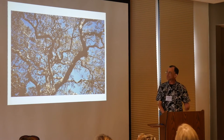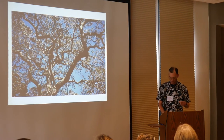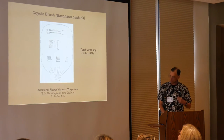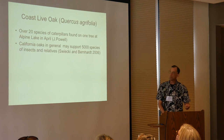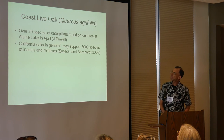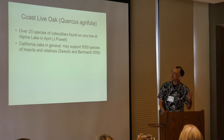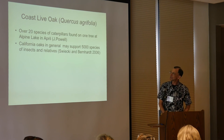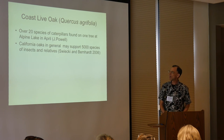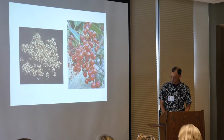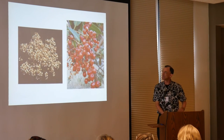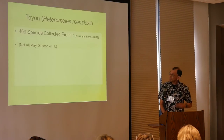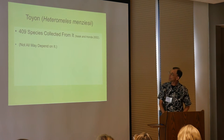We also have the coastal live oak. A lot of these species are doing very many different things — that's additional detail. One individual coastal live oak tree was found to have over 20 species of caterpillars at Alpine Lake in April. Jared Powell did that study, and California oaks in general may support 5,000 species of insects. Our toyon has been found to have 409 species collected from it, though we're not sure how many are strictly depending on it.